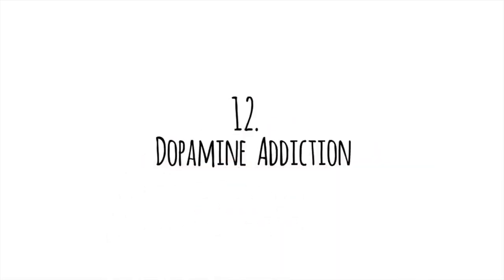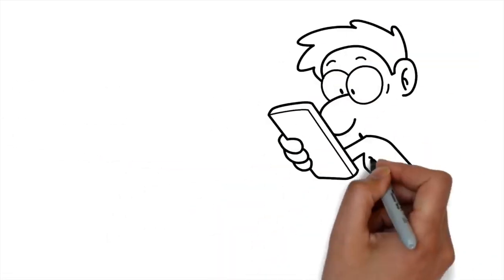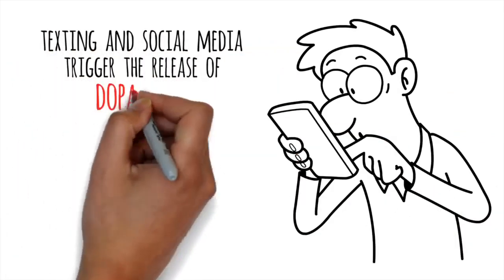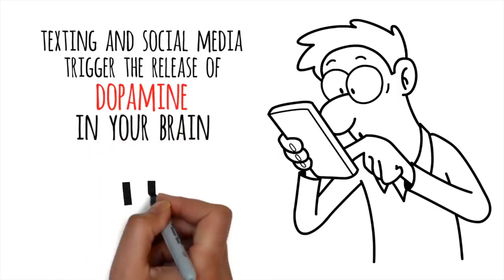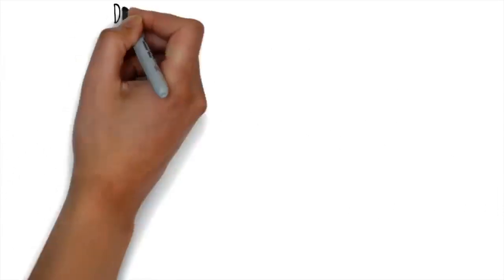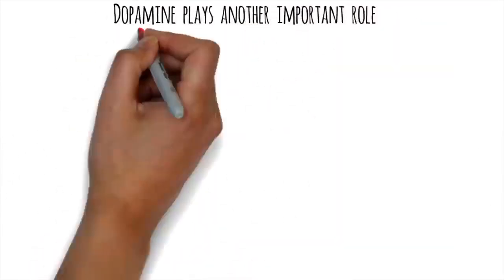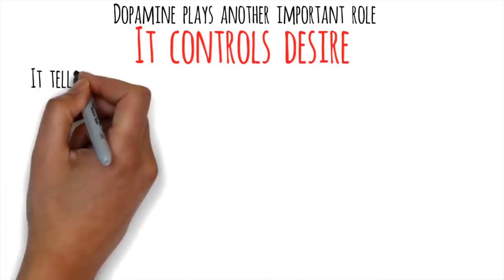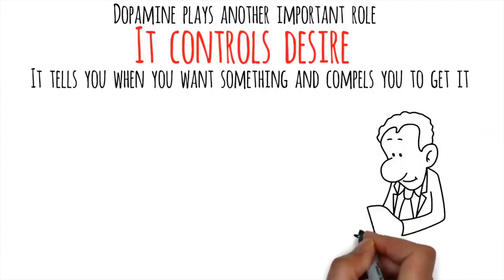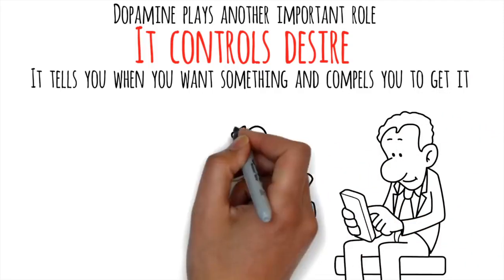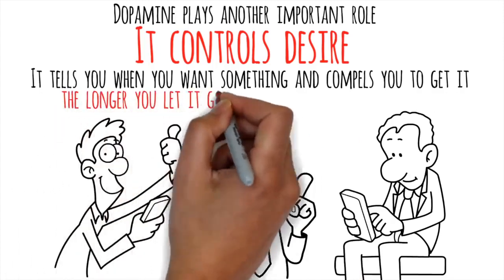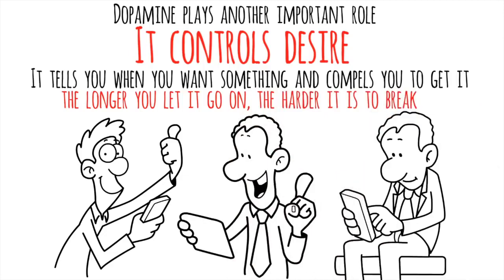Number 12. Dopamine Addiction. Why is it so easy to stare at your phone for hours on end? A recent study found that texting and social media trigger the release of dopamine in your brain. Dopamine is commonly associated with pleasure, but that isn't why you can't put your phone down. Dopamine plays another important role. It controls desire. It tells you when you want something and compels you to get it. This is what pushes you to keep talking, clicking, or scrolling. Each time you do, dopamine sends more pleasure signals to the brain. It's a dangerous cycle because the longer you let it go on, the harder it is to break.